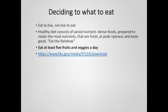When you're trying to decide what to eat, it's important to remember that you're trying to eat to live — you don't want to center your whole lifestyle around eating. Food is fuel for life. In general, you want a diet consisting of a large variety of nutrient-dense foods. You want to prepare those foods to retain the most nutrients possible — keep them fresh, at peak ripeness and taste so you're motivated to eat them. If you eat foods of a wide variety of colors, you'll be reasonably certain to get a diverse palette of vitamins and minerals.